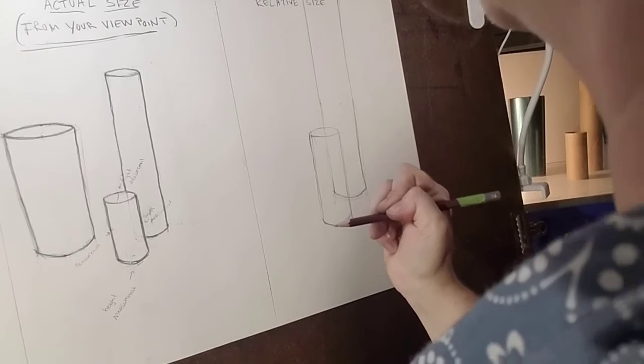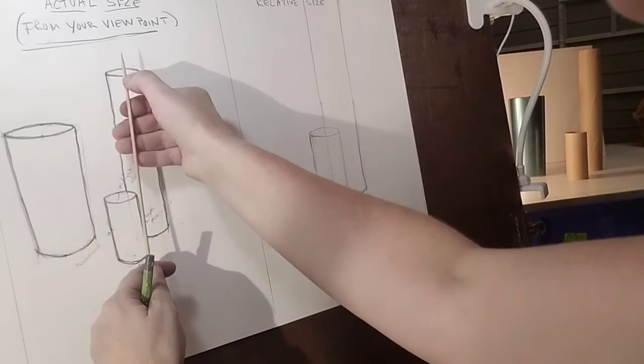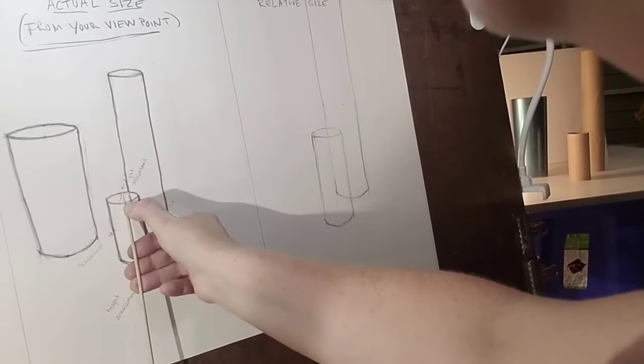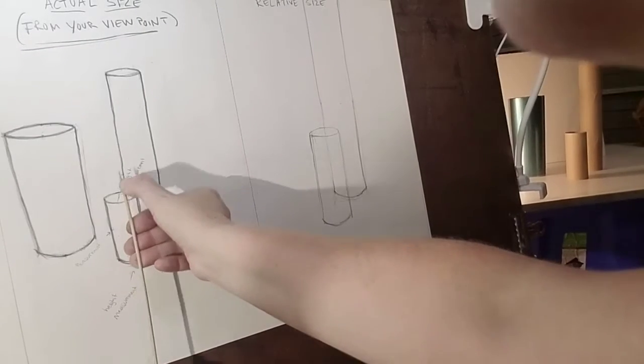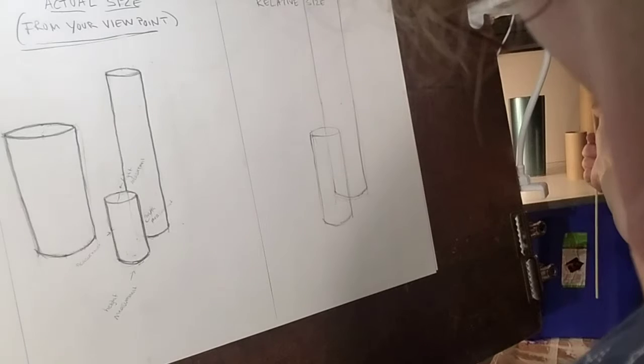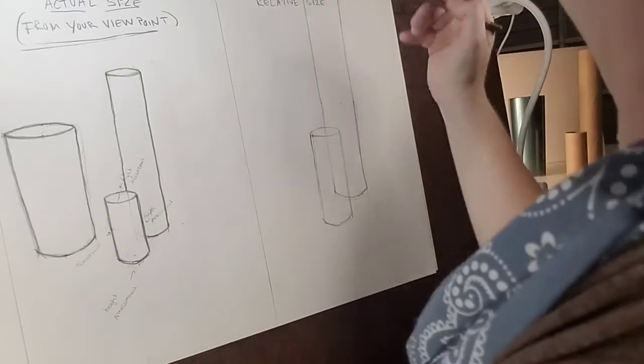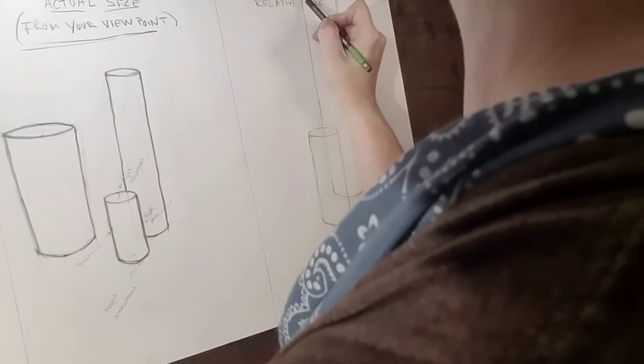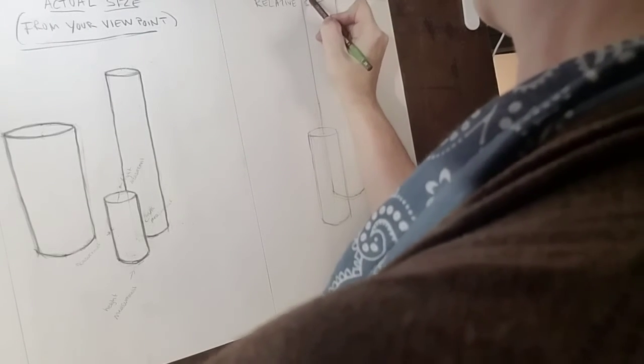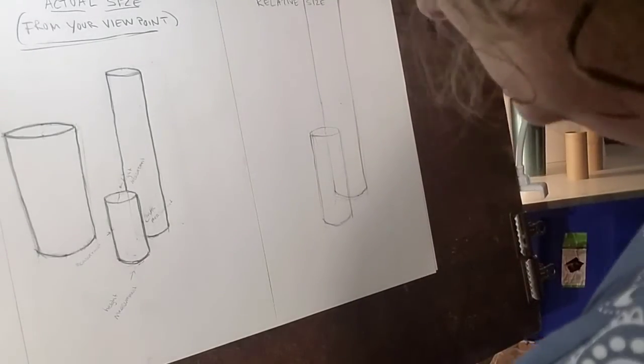Now we need to measure that. So this one is less open, has a less wide opening than this. Oh, oh no it doesn't. But it has to. I'm going to go back to the real objects because I don't trust that measurement. Yes. Okay. So the opening is much smaller because it's higher. That one is incorrect.